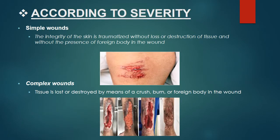According to severity: simple wounds are those where the integrity of the skin is traumatized without loss or destruction of tissue and without the presence of a foreign body in the wound. Complex wounds are those where tissue is lost or destroyed by means of a crush, burn, or foreign body in the wound.